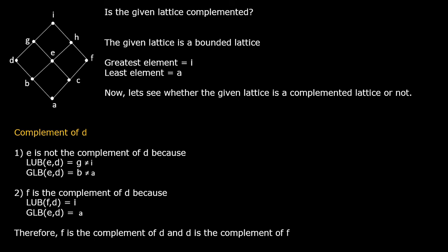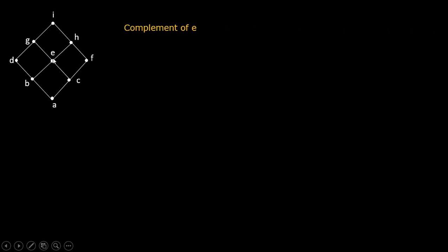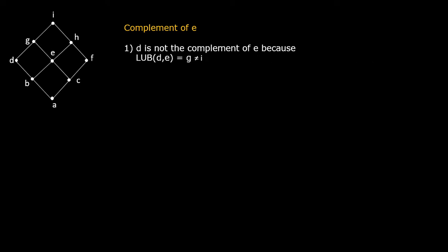Now let us find the complement of e. d is clearly not the complement of e, because we already found that e is not the complement of d. The least upper bound of e and d is equal to g, which is not equal to i, and the greatest lower bound of e and d is equal to b, which is not equal to a.